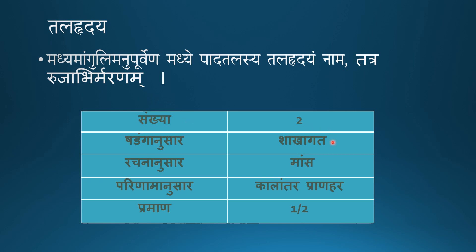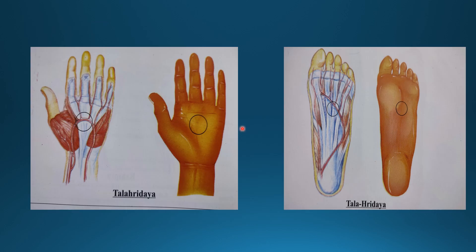It is twin in number, Shakha Gatha Marma. According to Rachana it is Masa Marma. According to Parinama, it is Kalantara Pranahara Marma, and its measurement is half Anguli in length. It is present at the base of the middle finger, base of the middle toe, center of the sole, and center of the palm. The underlying structures in the sole include the plantar aponeurosis — a modified deep fascia that covers the sole — a very thick connective tissue that functions to support and protect the underlying structures of the foot.